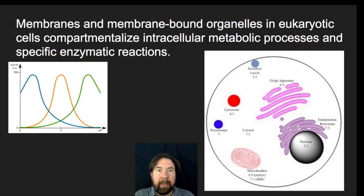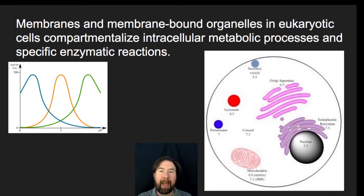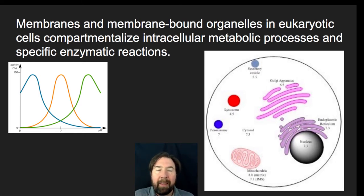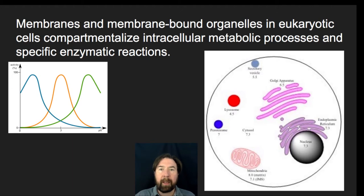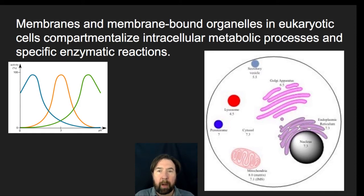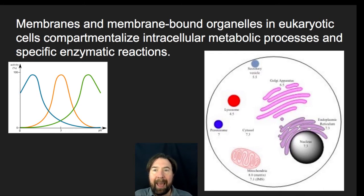So why do we talk about these? Membranes and membrane-bound organelles in eukaryotic cells allow there to be specific metabolic processes and specific enzyme reactions. An enzyme is a type of protein that helps facilitate a chemical reaction by lowering the activation energy — specifically a biological catalyst that takes a substrate and turns it into products. Different enzymes have different structures made up of amino acids, and those amino acids fold up depending on the environment, so different enzymes will have different activity at varying pHs or other environmental conditions.